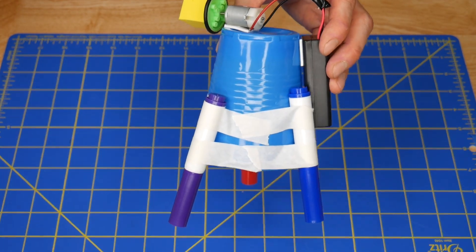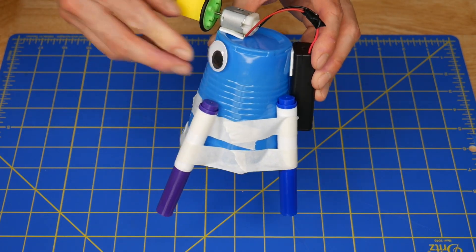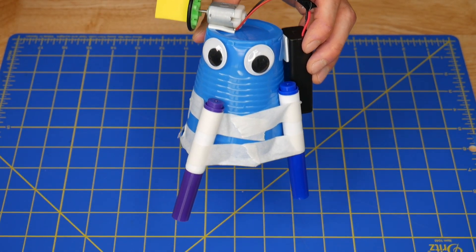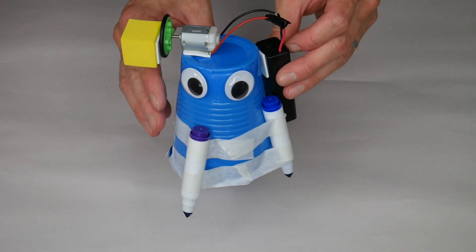So functionally this is complete but it is absolutely required that you add some googly eyes onto this. Okay now it's complete, let's test it out. For the drawing surface I highly recommend using packing paper. It's really big and really cheap. Uncap the markers and let's try them out.